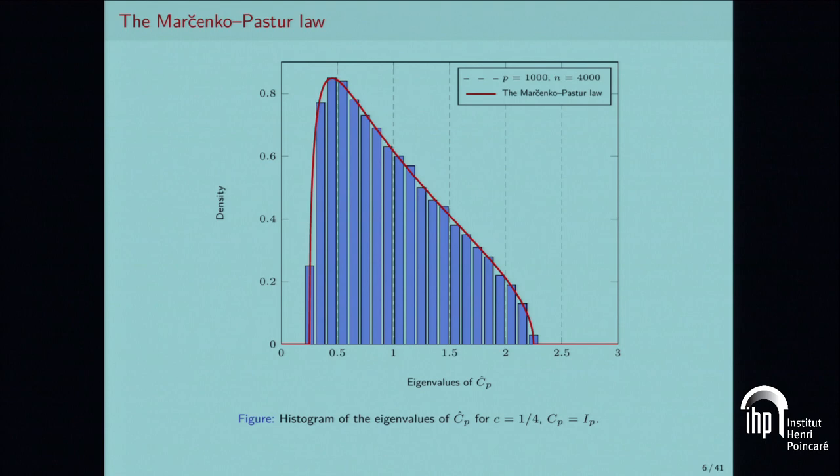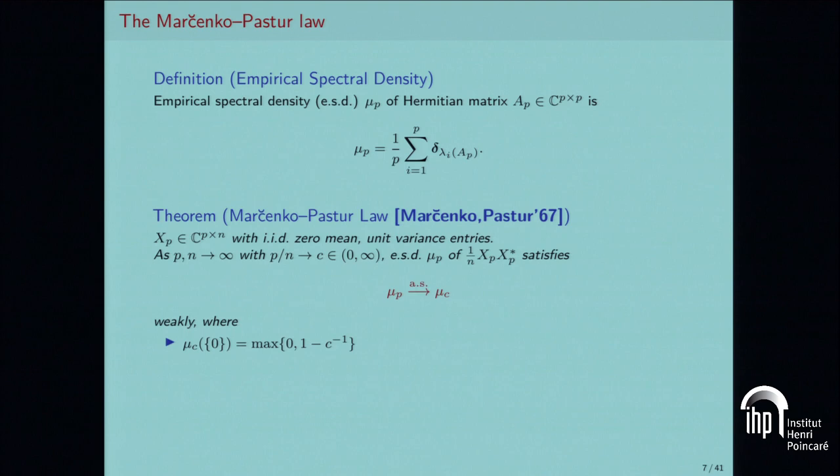It was proved that the eigenvalue distribution converges to a smooth distribution called the Marchenko-Pastur law. Here, in the case where the population covariance is the identity, you would naturally expect all eigenvalues of Ĉ_p to be very close to 1 — but that's not true. The eigenvalues tend to spread.